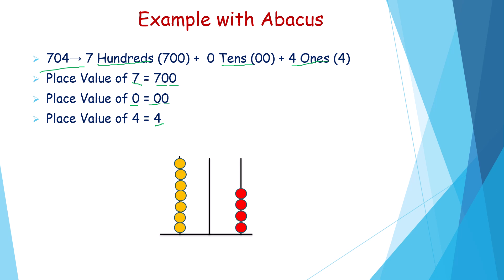Here is the abacus. In the hundreds place, how many beads should you draw? 7. Because the hundreds digit is 7. Count: 1, 2, 3, 4, 5, 6 and 7. In the tens place, how many beads should you draw? 0 means nothing. And in the ones place, how many beads should you draw? 4. Because in the ones place, 4 is there. Count: 1, 2, 3 and 4. This is 704.